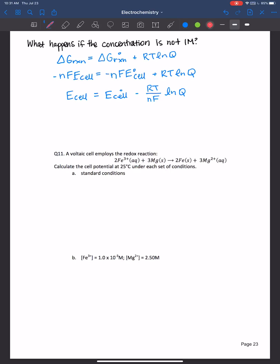So if we say that RT over NF natural log of Q is 0.0592 volts over N log Q, so that's 0.0592 volts over the moles of electrons, so that can change depending on your redox reaction times log Q. So we're just saying this is all equal to this, just simplifying it more in the form that you would see on your info sheet if you're taking my course. This is the Nernst equation.